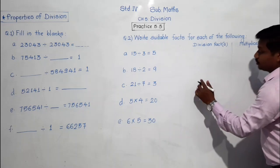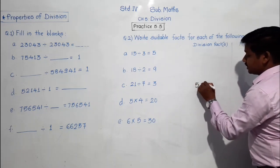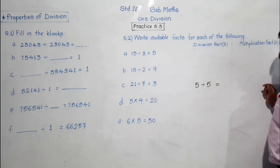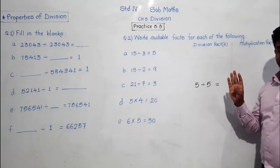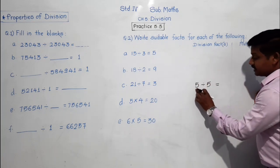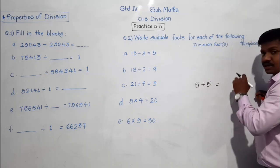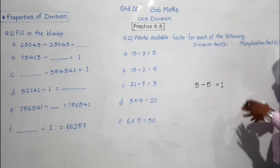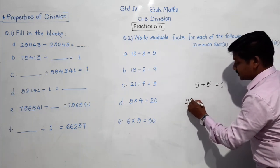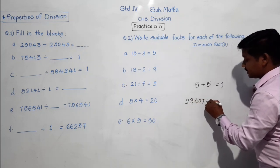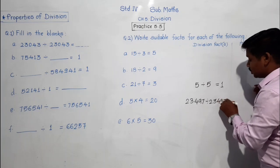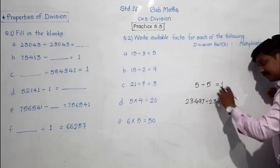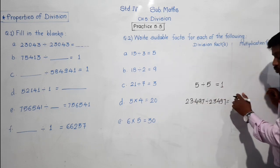I will show you examples. Suppose if we divide 5 by itself — 5 divided by 5 — what answer will you get? 5 divided by 5: 5 ones are 5, so the answer is 1. Similarly, if you divide any number by itself — say 23,497 divided by 23,497 — what answer will you get? 1 only.